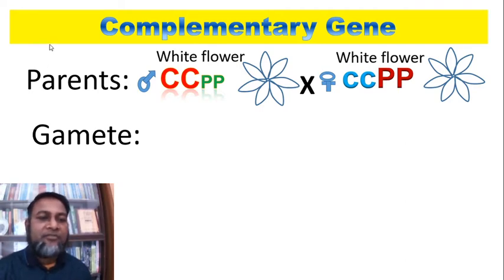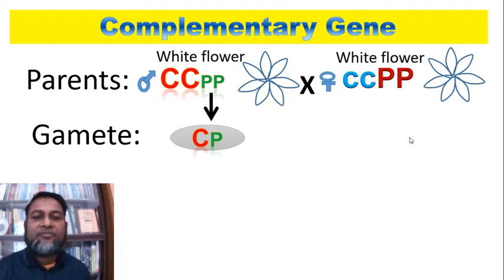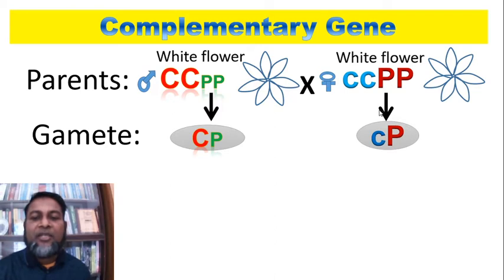During gamete formation, from CC one capital C comes to the gamete, and from pp one small p comes to the gamete. As a result, the male gamete has capital C and small p. On the other hand, the female gamete has one small c (from cc) and one capital P (from PP), giving female gamete small c and capital P.